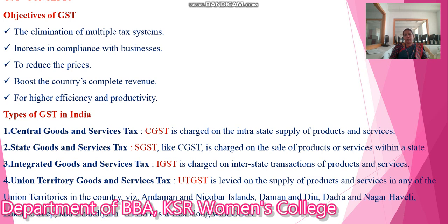Types of GST in India: The first is Central GST (CGST) — Central Goods and Service Tax — which is charged on the intrastate supply of products and services. The second is State Goods and Service Tax (SGST), which like CGST is charged on the sale of products or services within a state. The third is Integrated Goods and Service Tax (IGST), which is charged on interstate transactions of products and services. The fourth is Union Territory Goods and Service Tax (UTGST), which is levied on the supply of products and services in any of the union territories in the country.